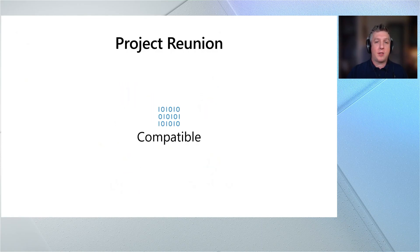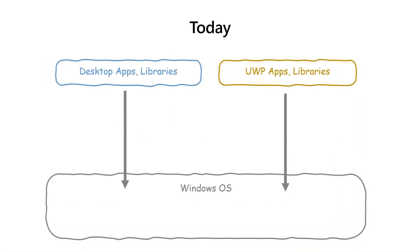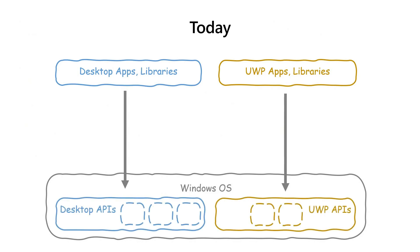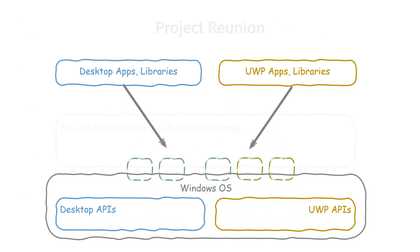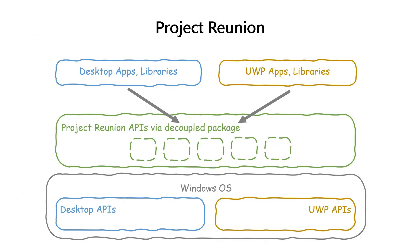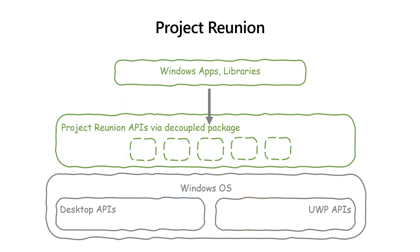When we talk about compatibility, we have to start with where apps are today. Apps call directly into desktop APIs or UWP APIs, which are part of the OS itself. Over time, we've brought more desktop APIs into UWP and enabled desktop apps to call some WinRT UWP APIs. With Project Reunion, we've started taking the APIs you already use across UWP and desktop apps, decoupling them from the OS, and making them available via package managers like NuGet. This will allow you to mix and match from the APIs that work best for your app and adopt new capabilities on demand, and over time, the distinction between desktop and UWP APIs will fade away.